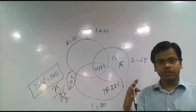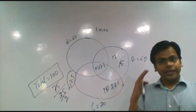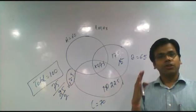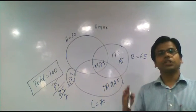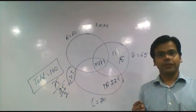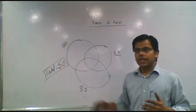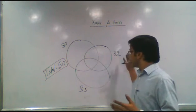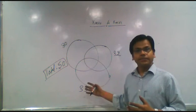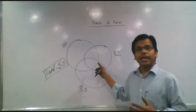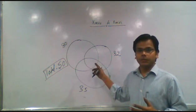Now here is a practice question for you. Pause the video, solve the question, and then resume. The question: A = 30, B = 32, C = 35, total = 50. Find the x maxima and x minima.